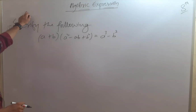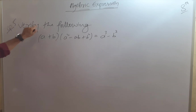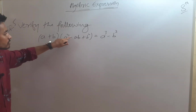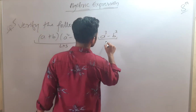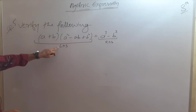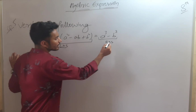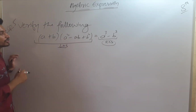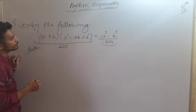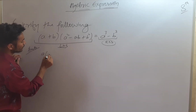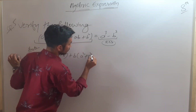We have the last question of Exercise 9.2 — question 5. We are given an expression and we have to verify it. The question says: verify the following expression — (a+b)(a²-ab+b²) = a³+b³. We can see the left hand side and the right hand side. By solving the left hand side we have to equate it with the right hand side.